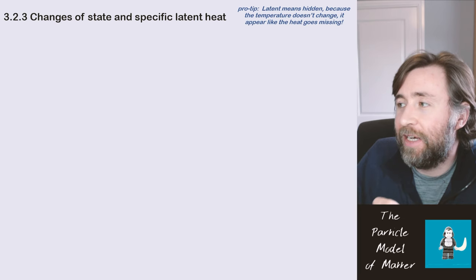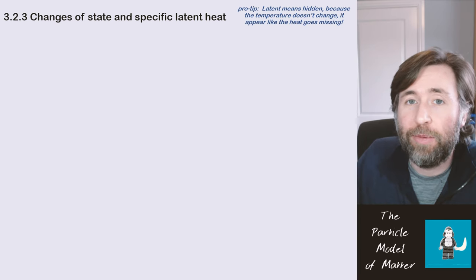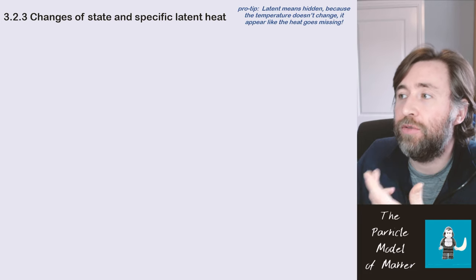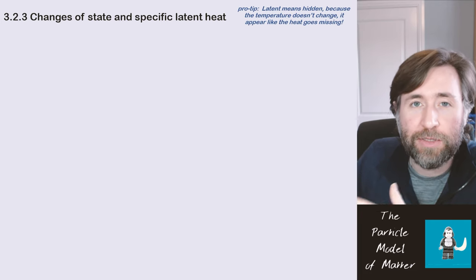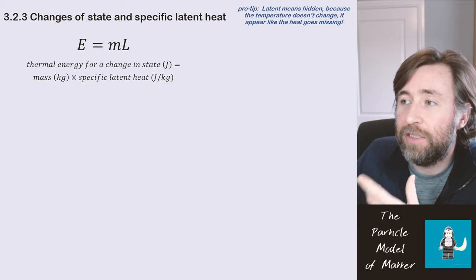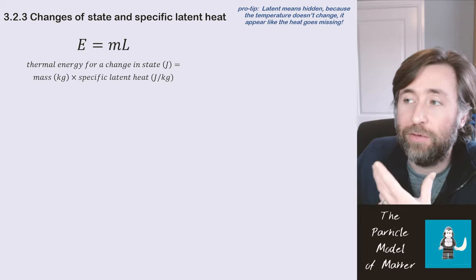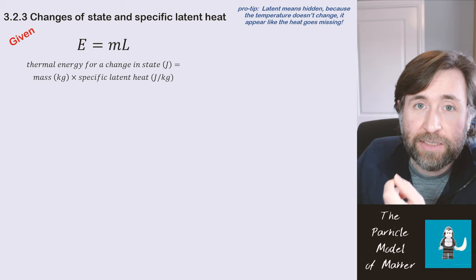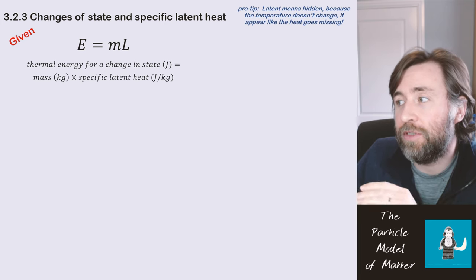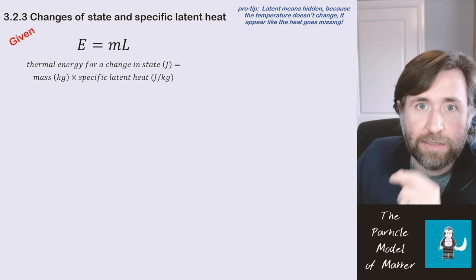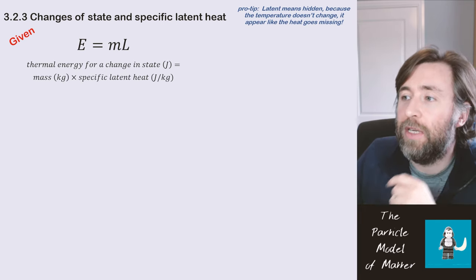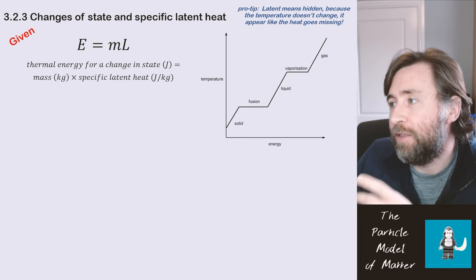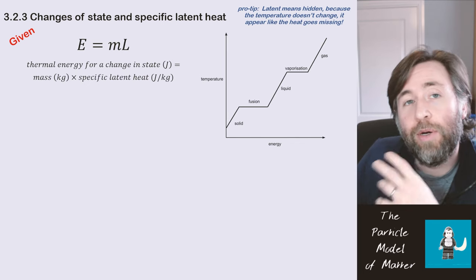Specific latent heat — 'latent' means hidden heat, and it seems hidden because during a change of state the temperature doesn't change. This is the equation, and you're given this one so you don't need to remember it. It's the energy for a change in state — when temperature doesn't change and only the state is changing — and it equals mass times specific latent heat.